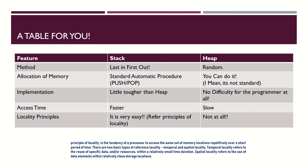Access time: stack is obviously faster because it is very well organized; heap is slow. Regarding locality principles — the tendency of a processor to access particular memory locations repeatedly over time — with an organized table of books it is easy to access the same book again soon, or the next book, or the rest. There are two principles: temporal locality and spatial locality, which are covered in detail in the embedded systems playlist. In stack, locality principles can be easily adapted. In heap, it is absolutely difficult because it is totally unorganized.